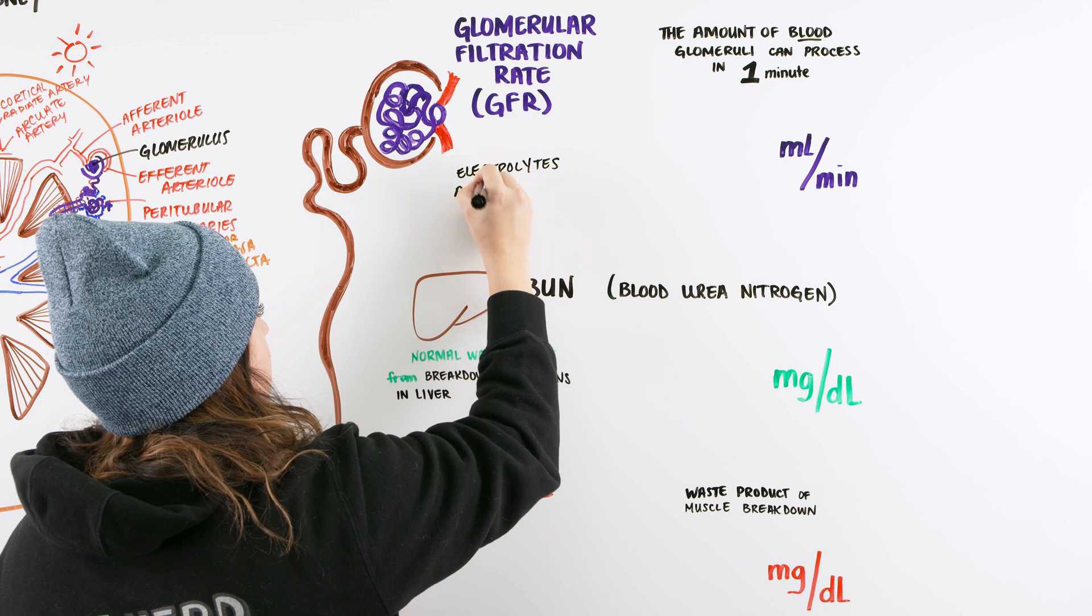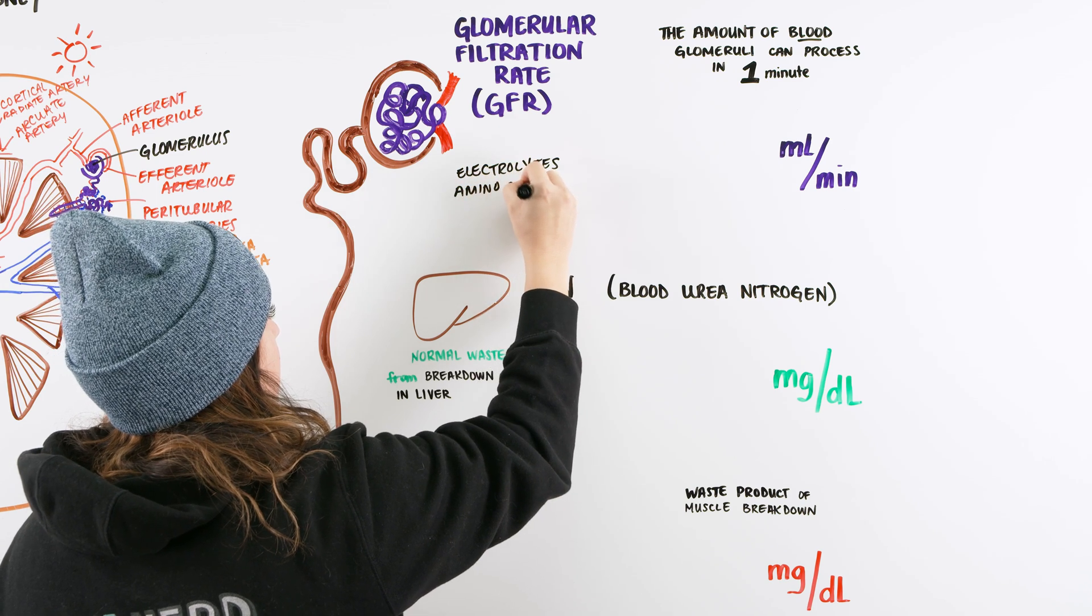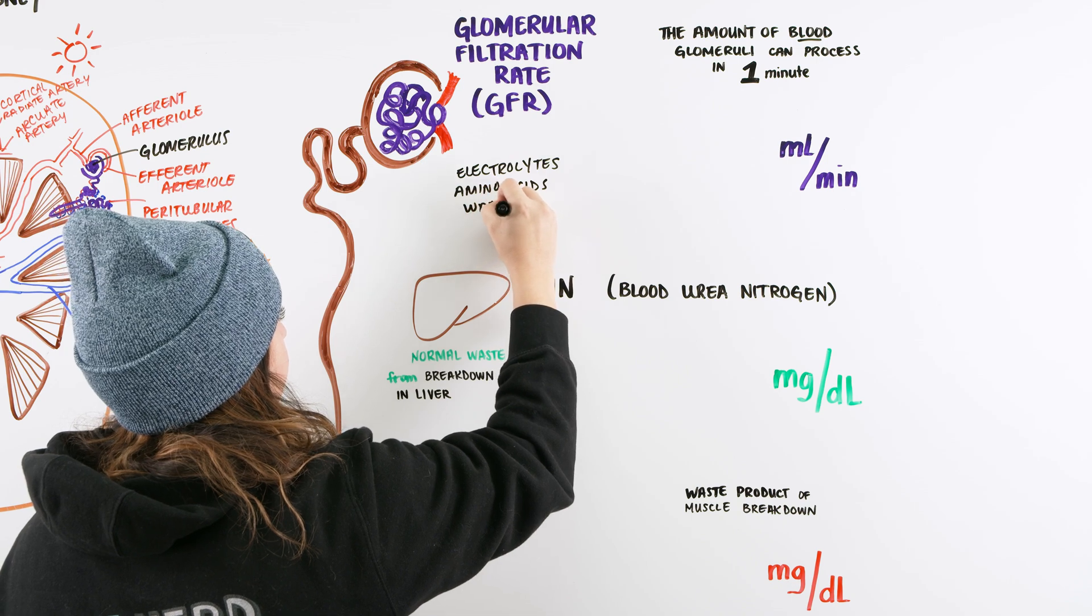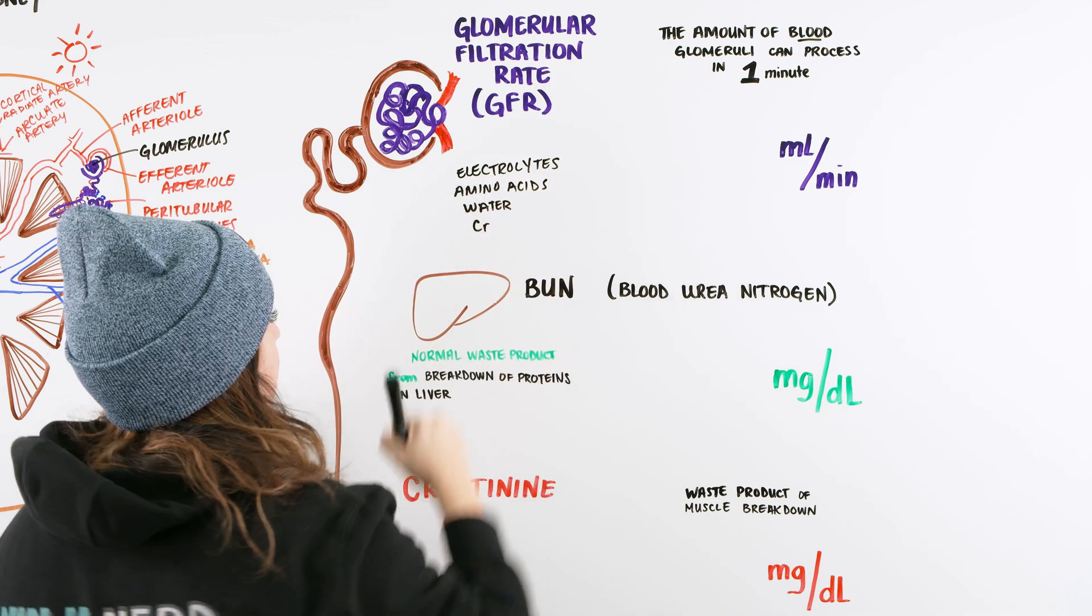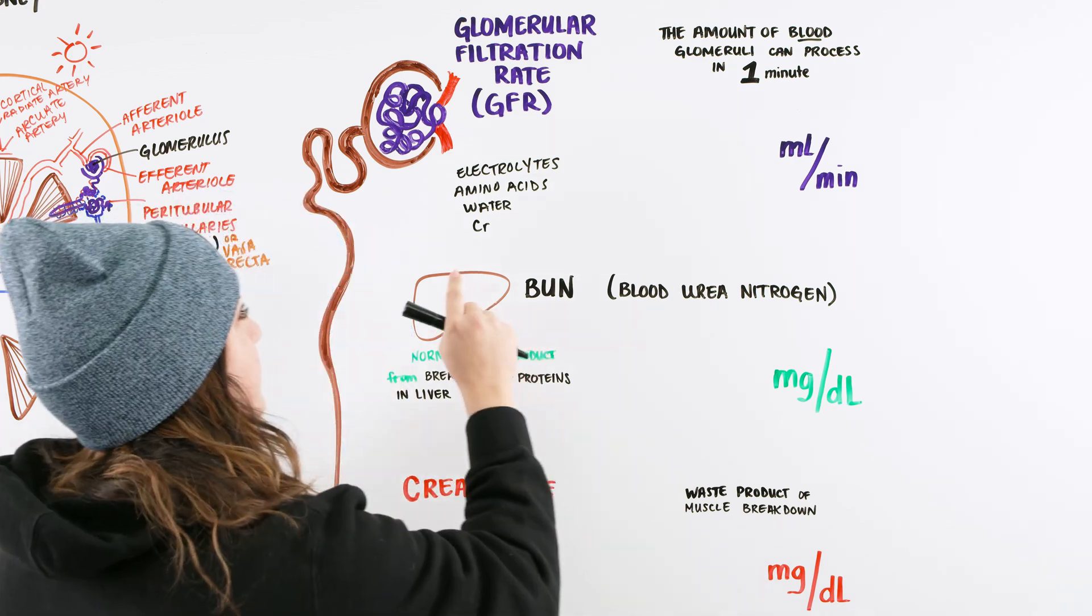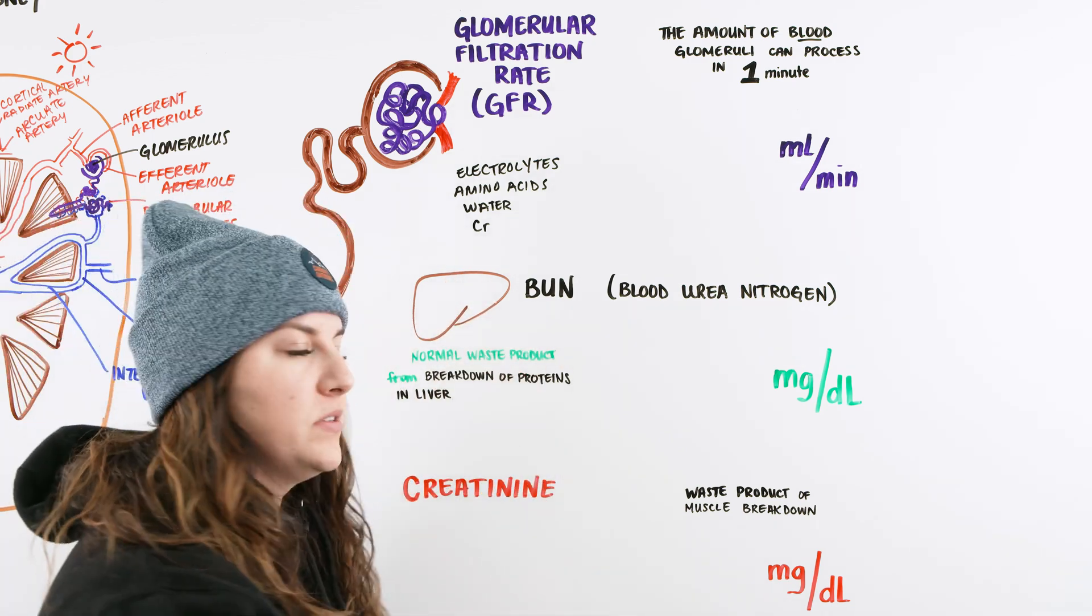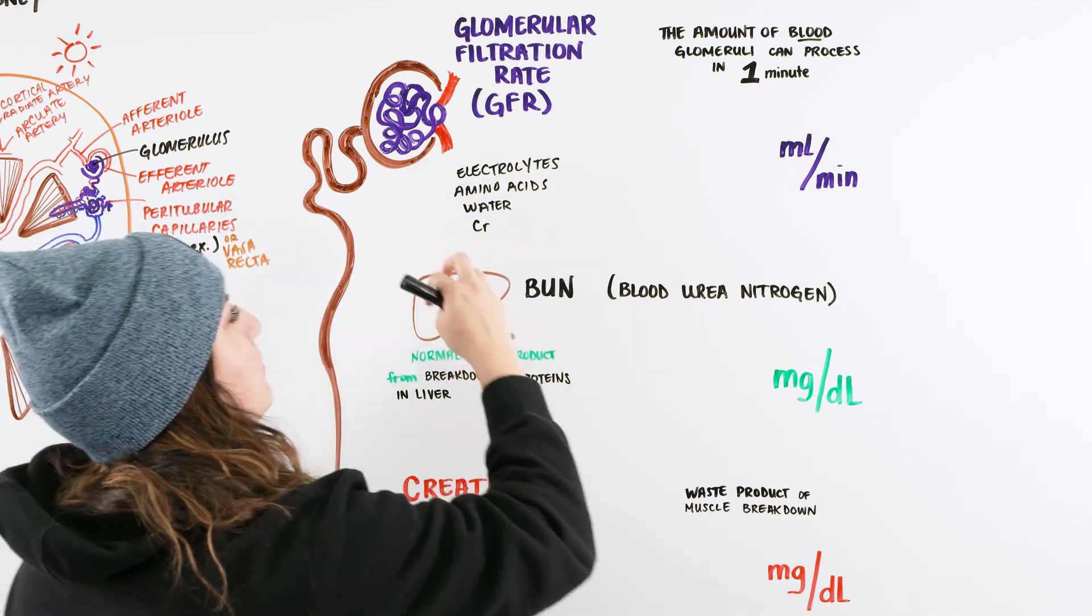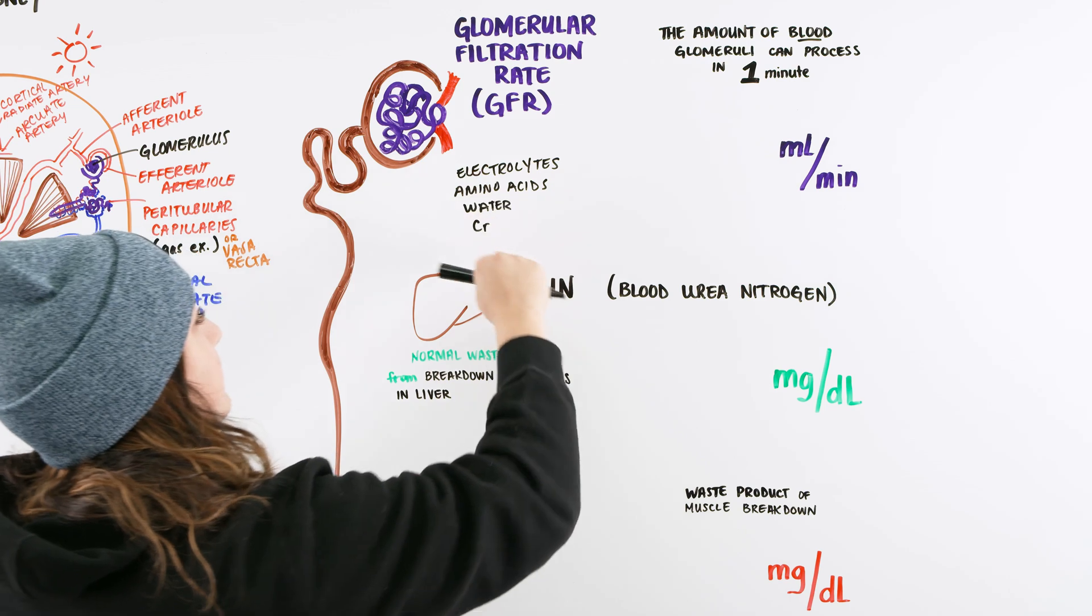We can think about amino acids, water, creatinine, and all a bunch of the different types, the small ones that are going to get through. So those things that are filtering through are not the big things, like our white blood cells, our red blood cells, platelets, plasma. All that stuff is staying within the blood. So when these things get filtered out...